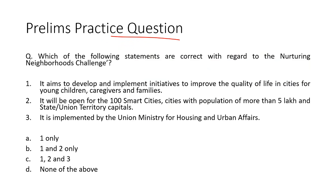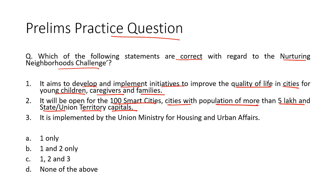Now let's take up the next question. Which of the following statements are correct with regard to the Nurturing Neighborhoods Challenge? It aims to develop and implement initiatives to improve the quality of life in cities for young children, caregivers and families. It will be open for 100 smart cities, cities with population of more than 5 lakh, and state and union territory capitals. It is implemented by the Union Ministry for Housing and Urban Affairs. All three statements are correct, so option C is the right answer.